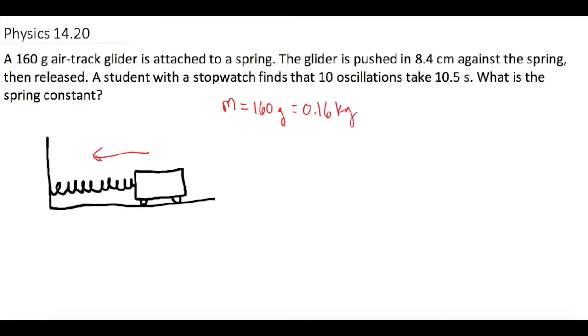They tell us the delta x, or how far we push in the spring, is 8.4 centimeters which is 0.084 meters. They also give us the number of oscillations and how much time it takes to do those.